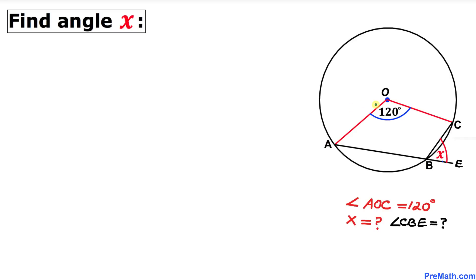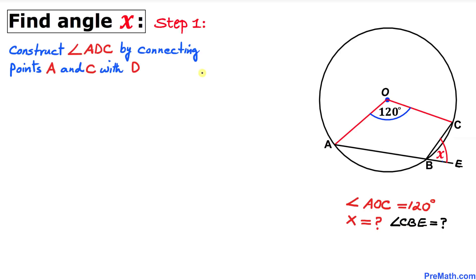Welcome to pre-math. In this video tutorial we have a quadrilateral OABC inside a circle such that angle AOC is 120 degrees. O is the center of this circle, and we are going to calculate angle x, which is the same as angle CBE. Let's get started with the solution.